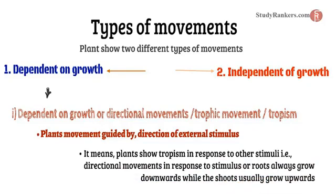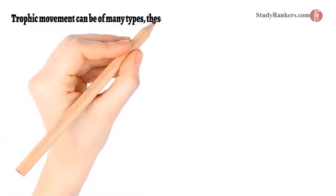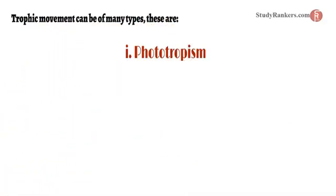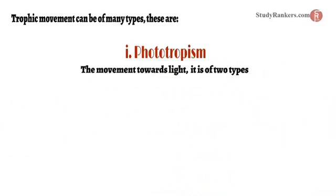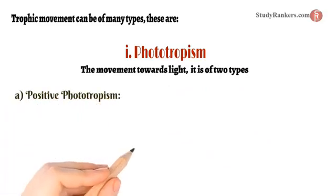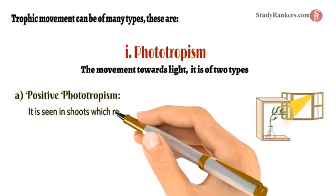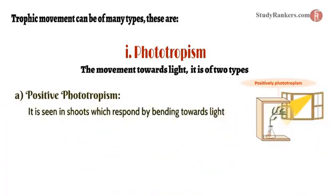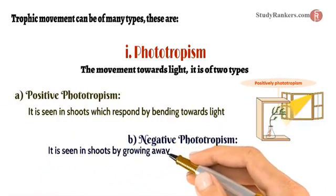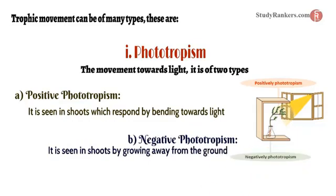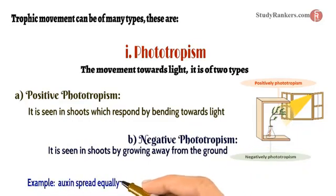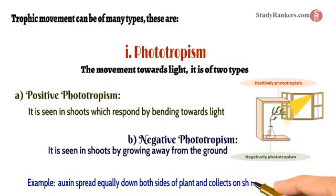Trophic movement can be of many types. The first is phototropism — movement towards light. It is of two types: positive phototropism, seen in shoots which respond by bending toward light, and negative geotropism, seen in shoots by growing away from the ground. For example, auxins spread equally down both sides of a plant and collect on the shady side of the plant.